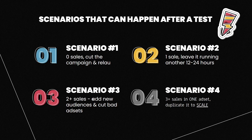Scenario three: you get two or more sales. Add new audiences and cut bad ads. If you get two sales, you can cut two of your seven ad sets and exchange those interests for new ones. Leave it running another day because you're hoping for scenario four.